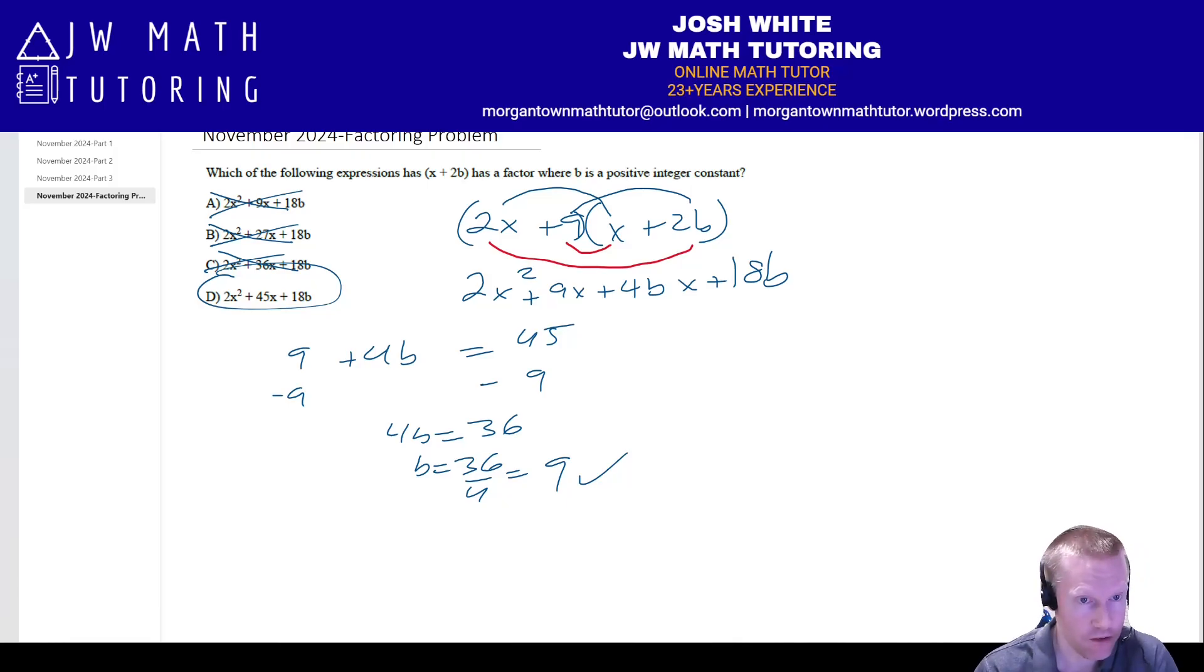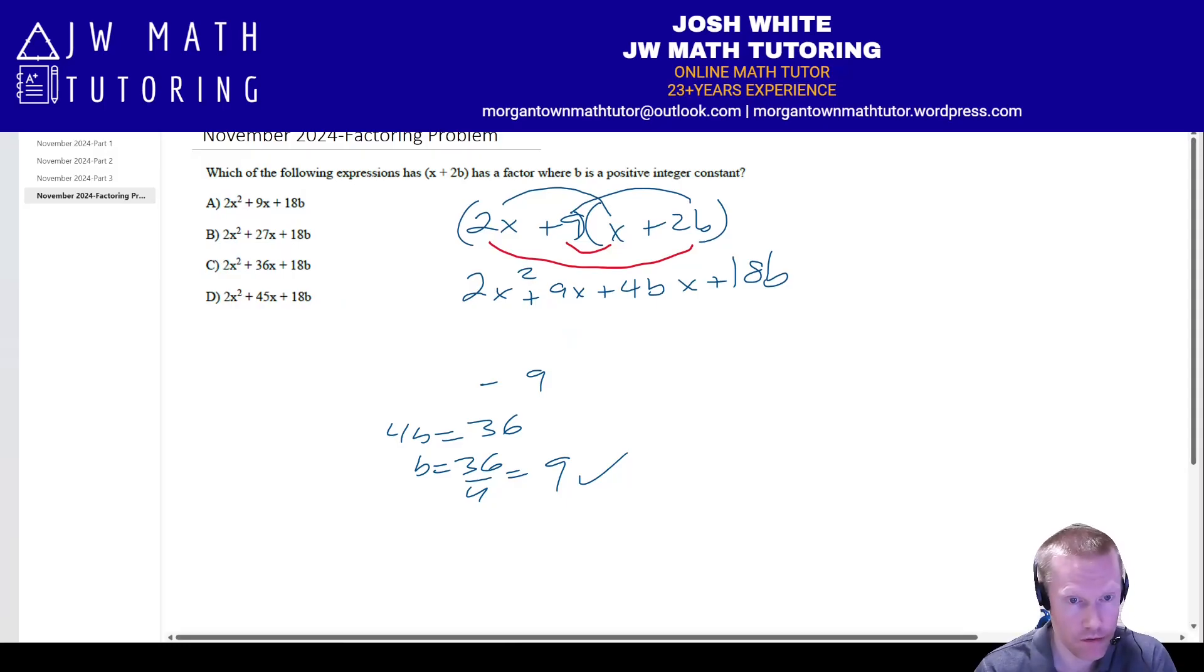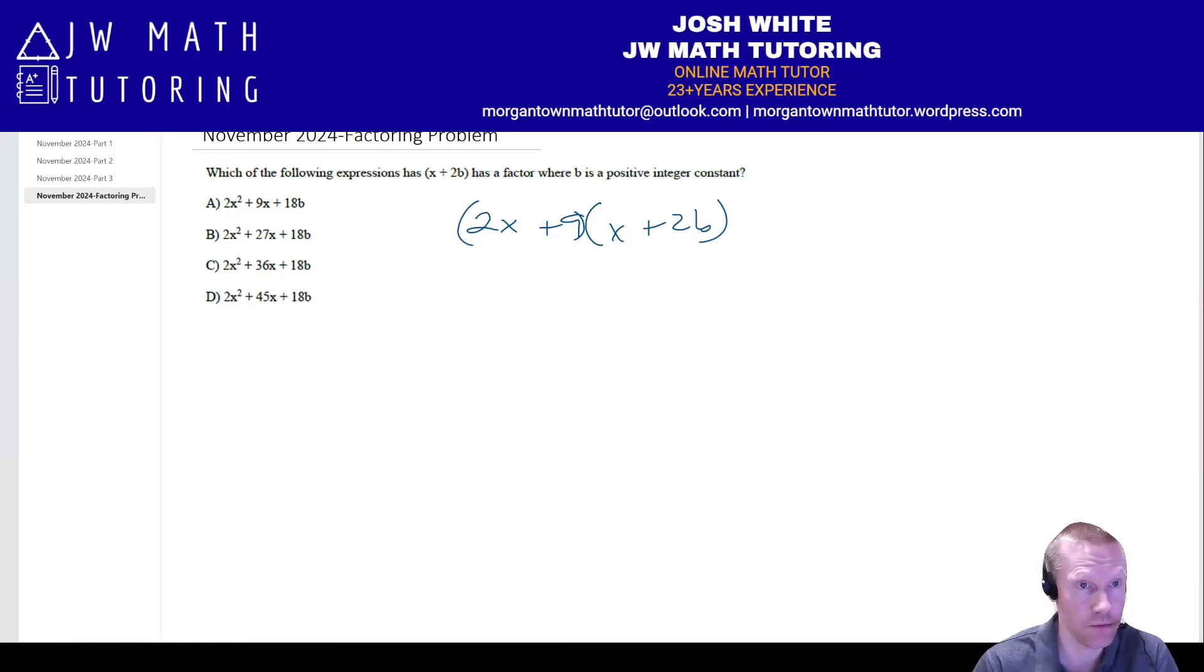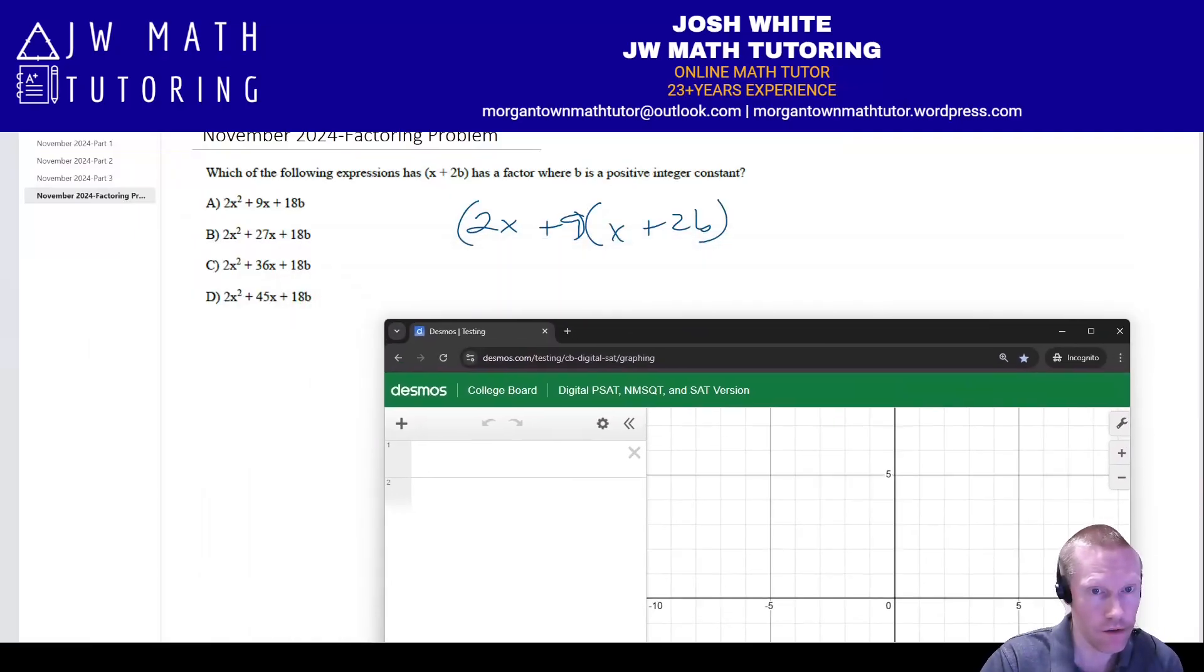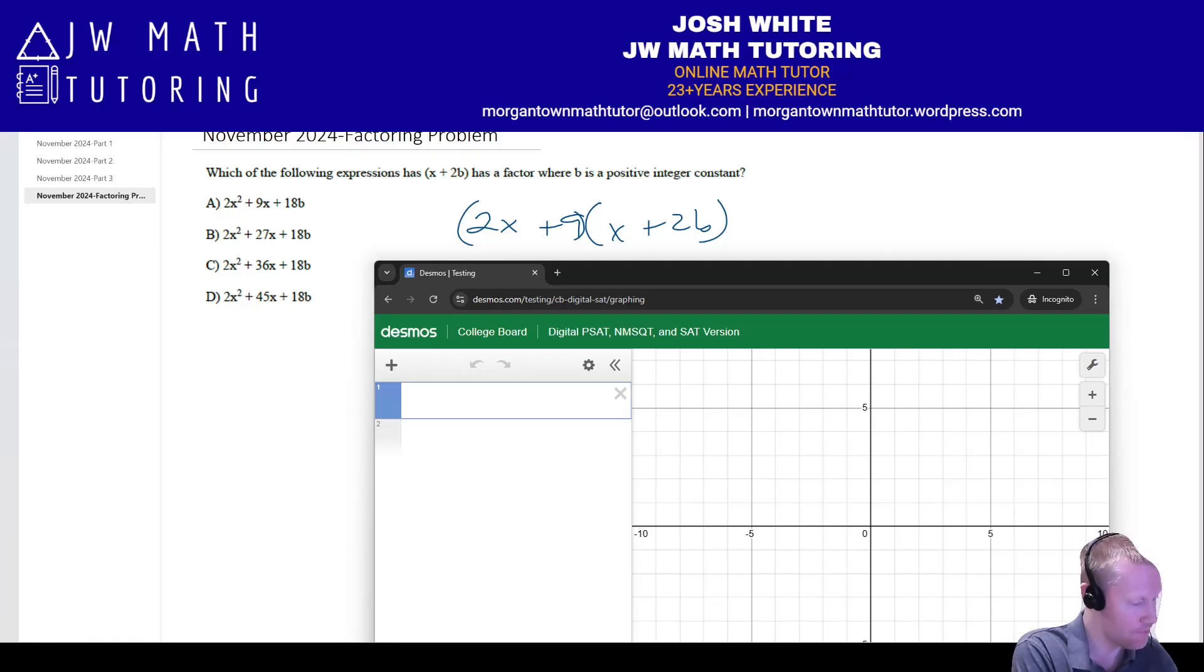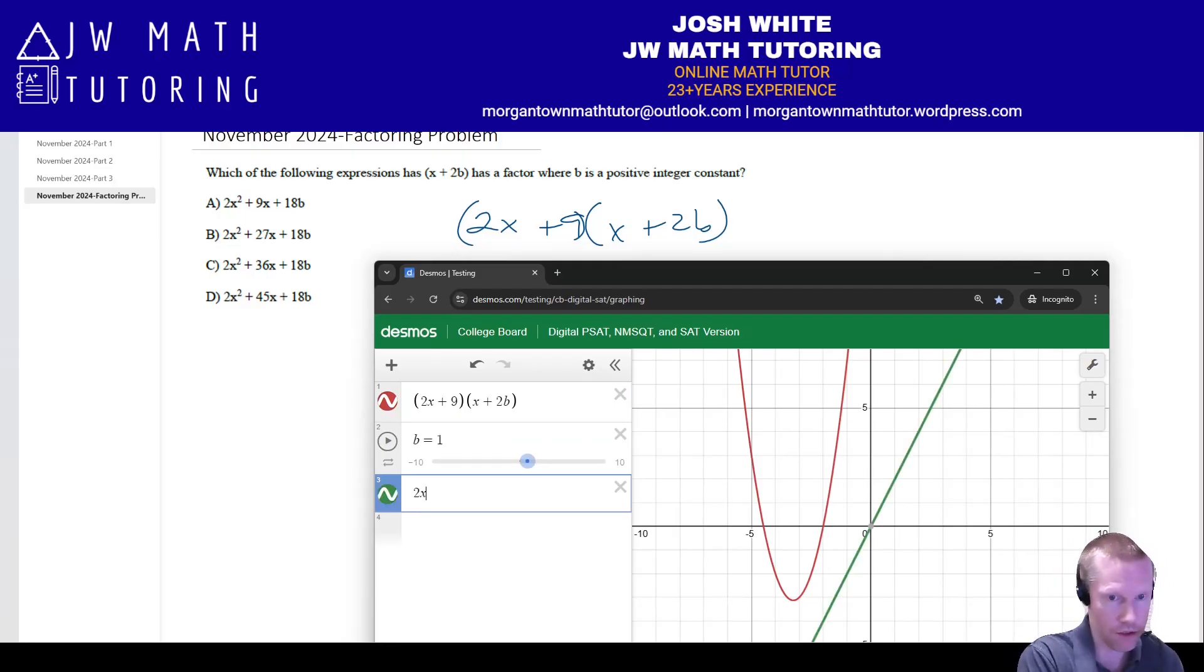Now, second method would be to use Desmos and to do the following. So first, let me get rid of all this because we're pretending that I'm solving this from the beginning. So first, you would still need to do this factoring. You would still need to determine that it's going to factor as 2x plus 9 times x plus 2b. Then what we're going to do is we're going to go to Desmos. And now you're going to enter in the graph of the original factored expression. We're going to add a slider for b, and then I'm going to enter in all of the answer choices.